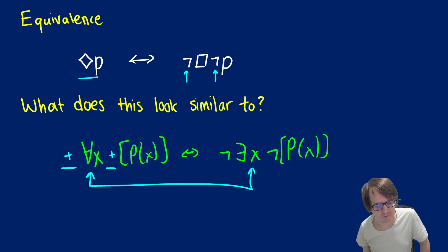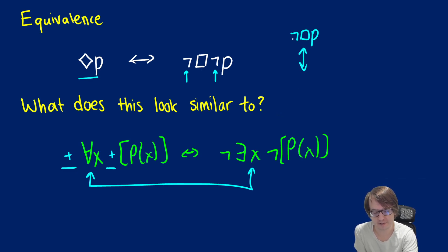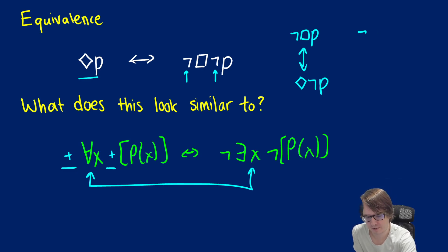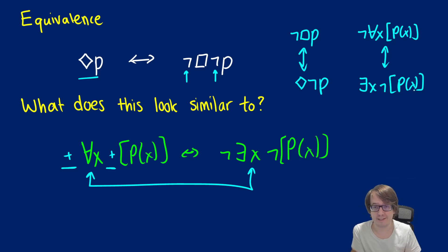We could have something like not box P. Using this equivalent exchange, the negative becomes a positive, the box becomes a diamond, and the positive before P becomes negative — we keep P as is. This is how we do the translation. Similarly, not for all x, P(x) is equivalent to exists x, not P(x). You can see the parallels between these two.